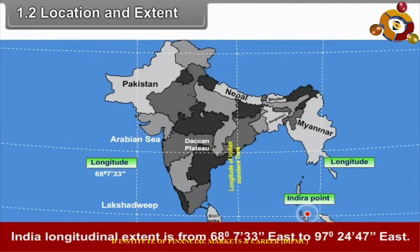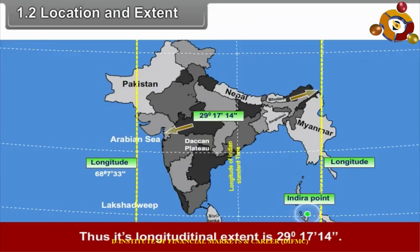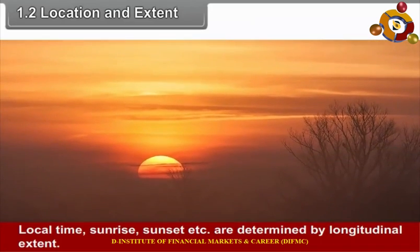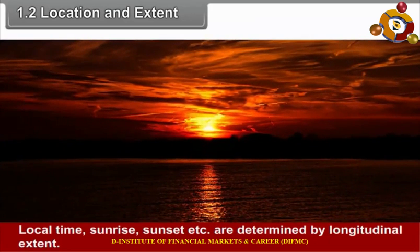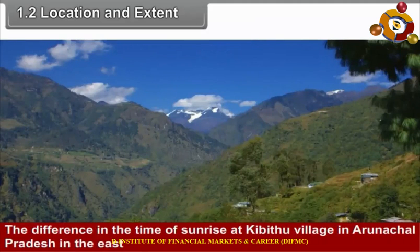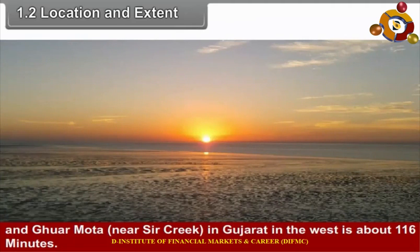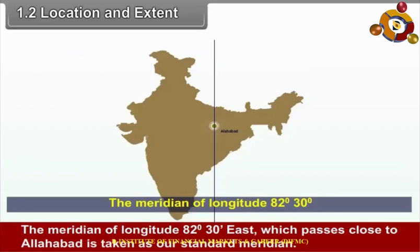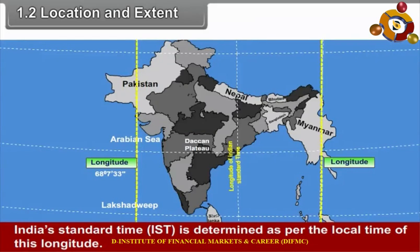India's longitudinal extent is from 68 degrees 7 minutes 33 seconds east to 97 degrees 24 minutes 47 seconds east, giving a longitudinal extent of 29 degrees 17 minutes 14 seconds. Local time, sunrise, sunset, etc. are determined by longitudinal extent. The difference in the time of sunrise at Kibithu in Arunachal Pradesh in the east and Guarmota in Gujarat in the west is about 116 minutes. The meridian of longitude 82 degrees 30 minutes east, which passes close to Allahabad, is taken as the standard meridian, and India's Standard Time (IST) is determined as per the local time of this longitude.